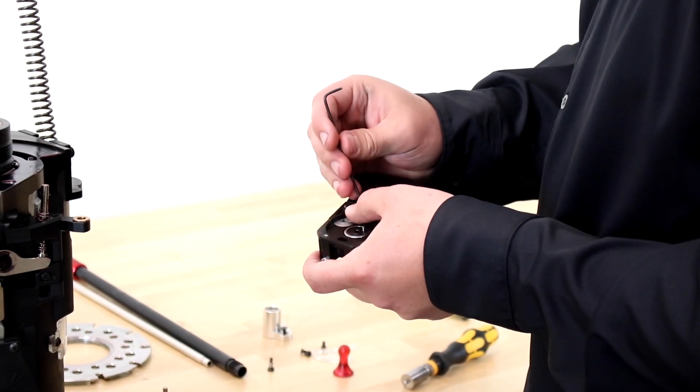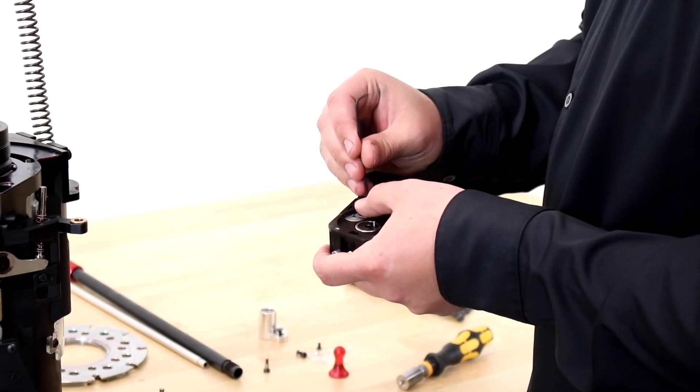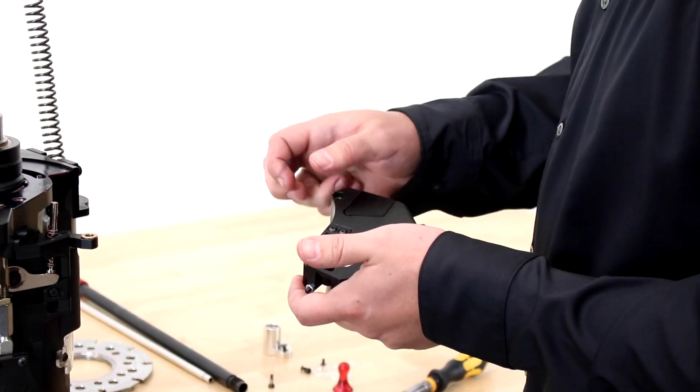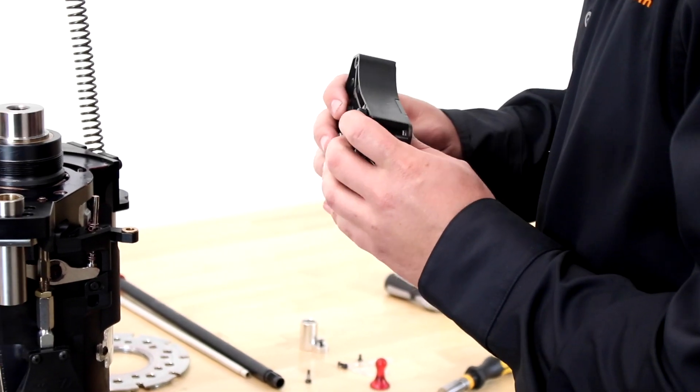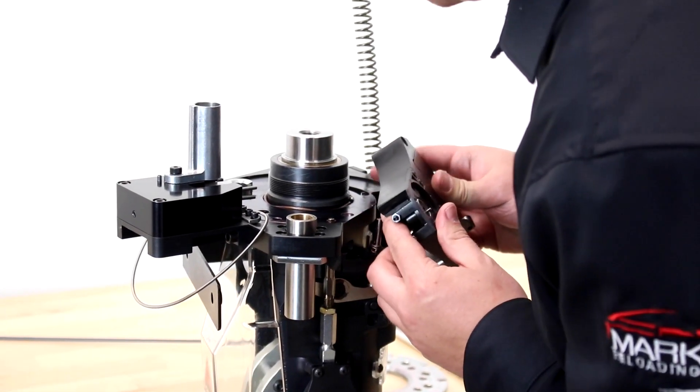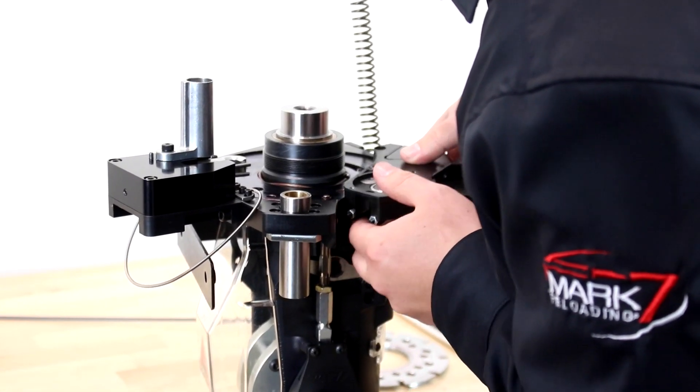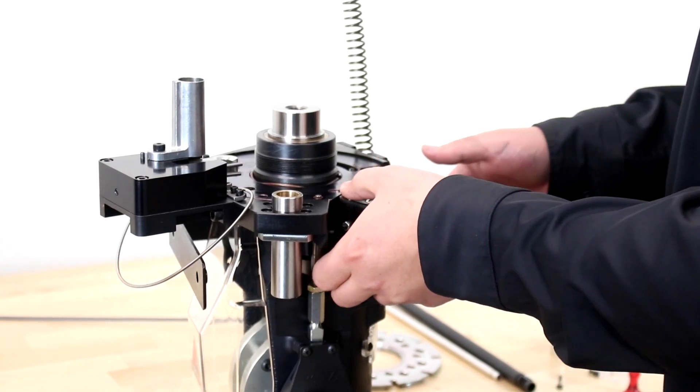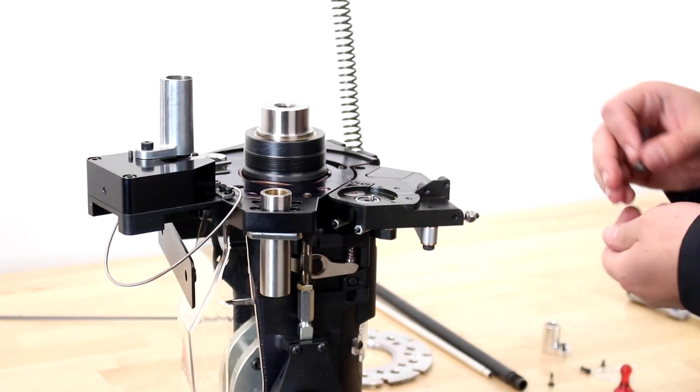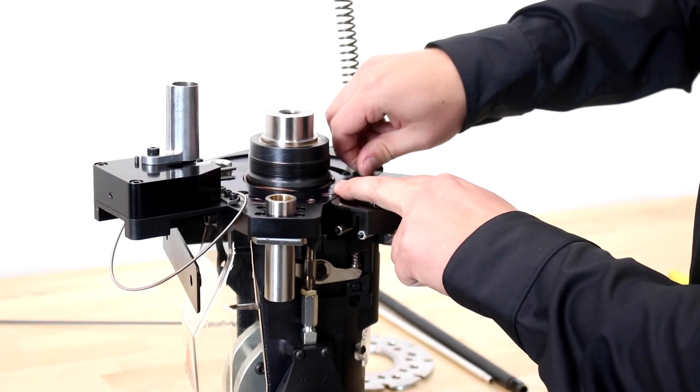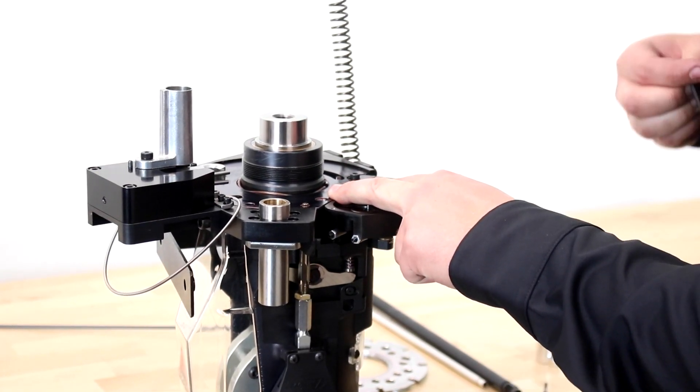I'm just going to simply lightly install this. We're going to set this later with the primer disc. Now we're going to line up the primer bushing onto the primer punch itself, drop it down. You should feel absolutely no resistance—it should drop right on—and we're going to reinstall the hardware in reverse order.